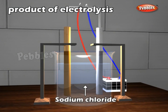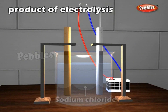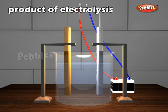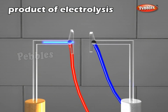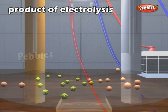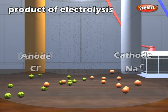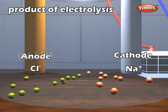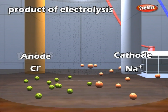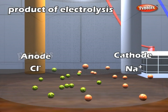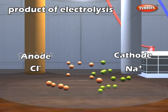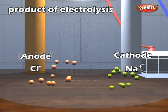In the molten state, sodium chloride has Na⁺ and Cl⁻ ions. When an electric current is passed, Na⁺ ions move towards the cathode while Cl⁻ ions move towards the anode.